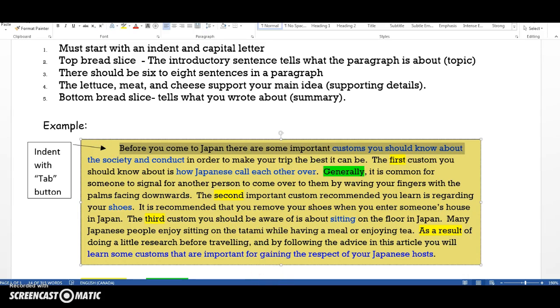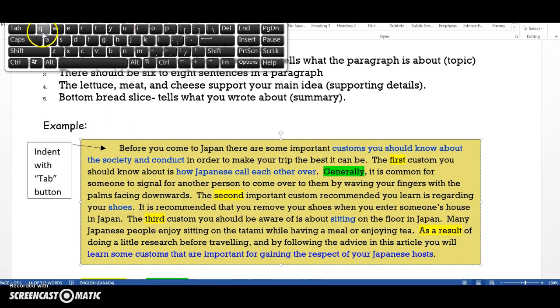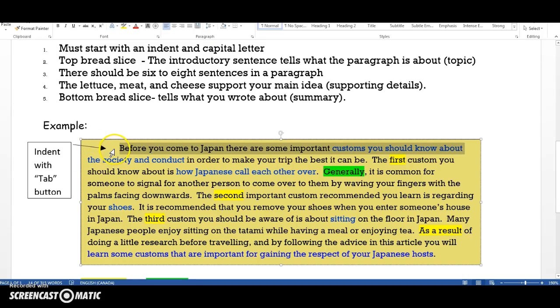A quick way to make an indent is to use your keyboard by pressing this tab button right here. That will allow you to make this space. Another success criteria for a paragraph is that it should be six to eight or more sentences. So, at least six to eight sentences in a paragraph, please.